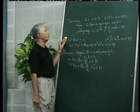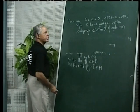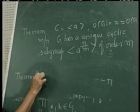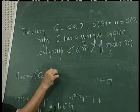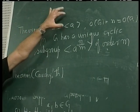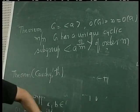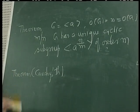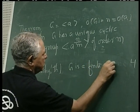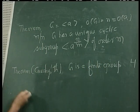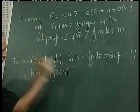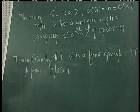The second result is very interesting, and this is Cauchy's theorem. Here we put the condition on the divisor. Suppose G is a finite group. If p is a prime and p divides the order of G, then the theorem says that...